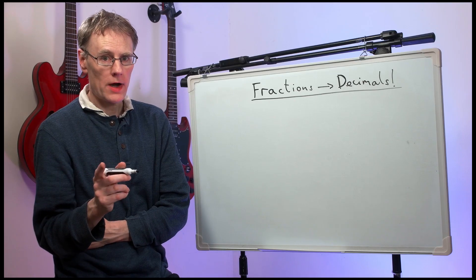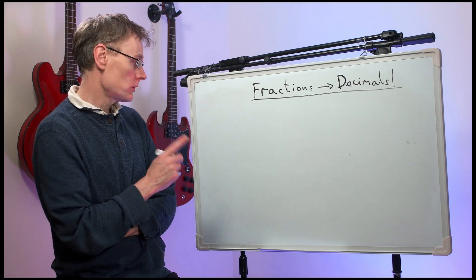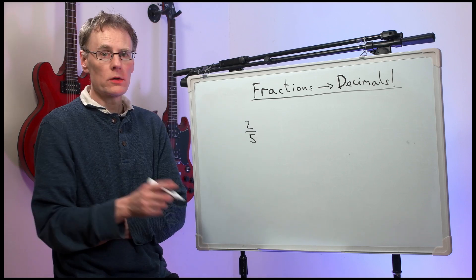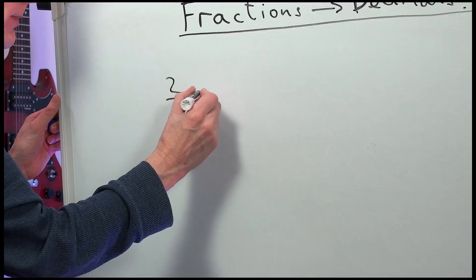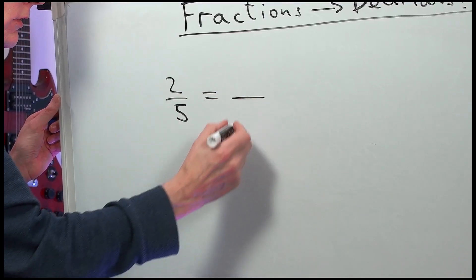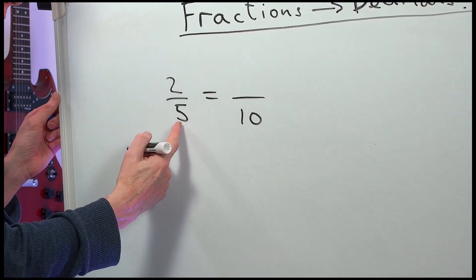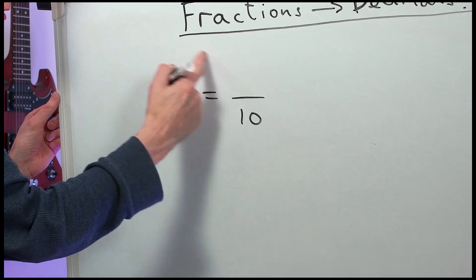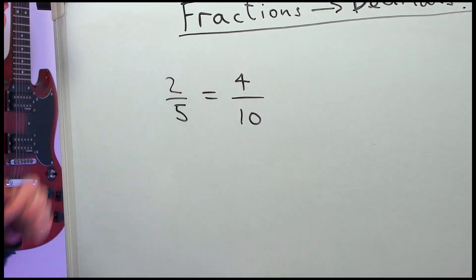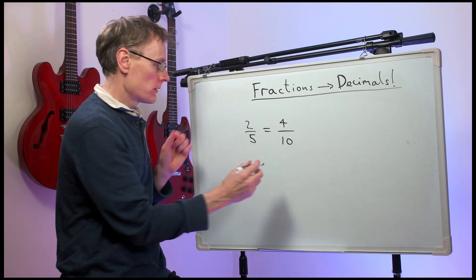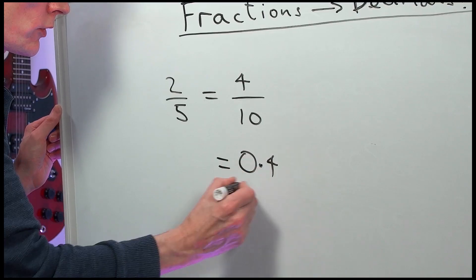Now, how do we change other fractions to decimals, like, for example, two-fifths? Well, two-fifths is the same as something out of ten. We've multiplied the bottom by two, so we times the top by two. We have four-tenths. Now, four-tenths is 0.4.